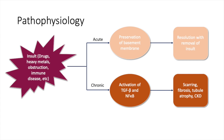Now that we know what TIN is, we have to understand the mechanisms behind its pathophysiology. There is always going to be an insult — some are more obvious than others. Examples for both acute and chronic TIN include drugs, heavy metals, obstruction, and immune disease. In acute TIN, there's preservation of the basement membrane and eventual resolution with removal of the insult, whereas in chronic TIN, there's activation of TGF-beta and NF-kappa-B that leads to scarring, fibrosis, tubular atrophy, and finally chronic kidney disease.